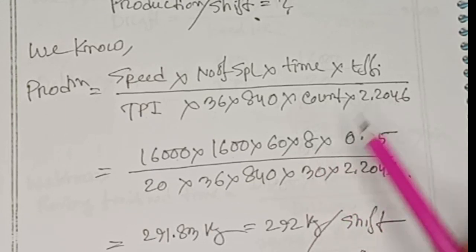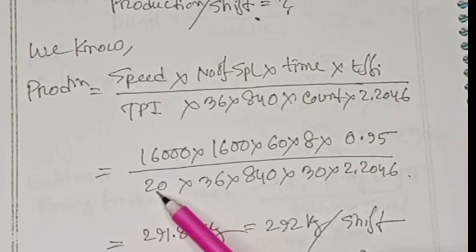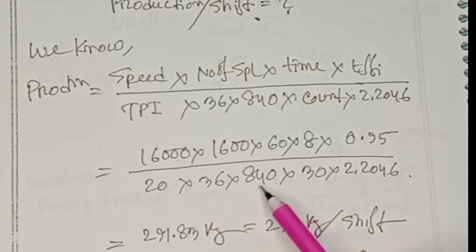TPI is 30, count 20, then 36,840. It is a constant for English cotton count.